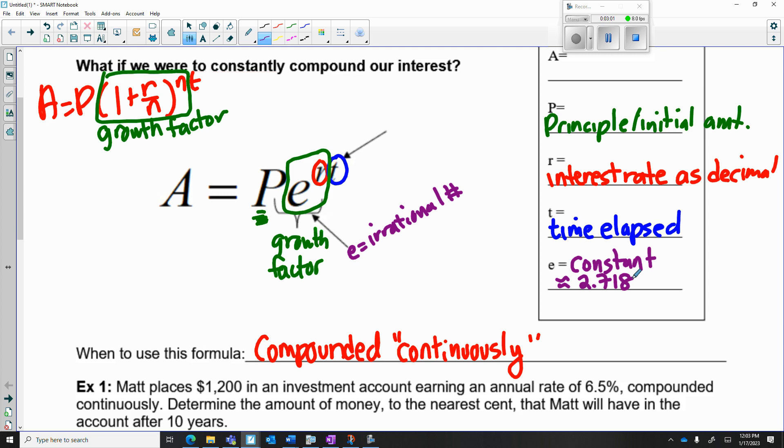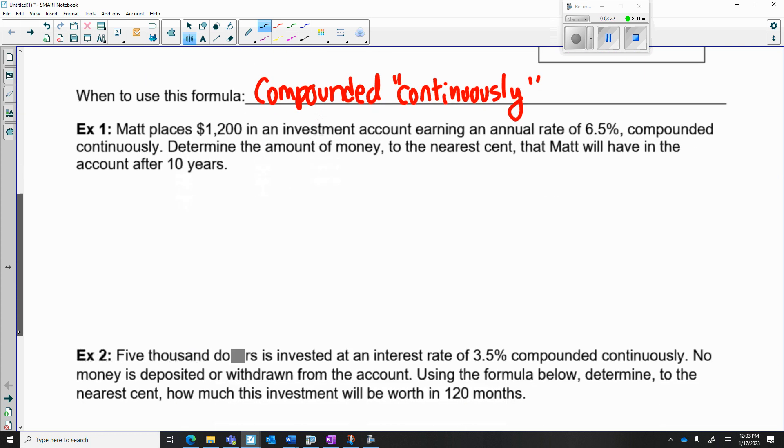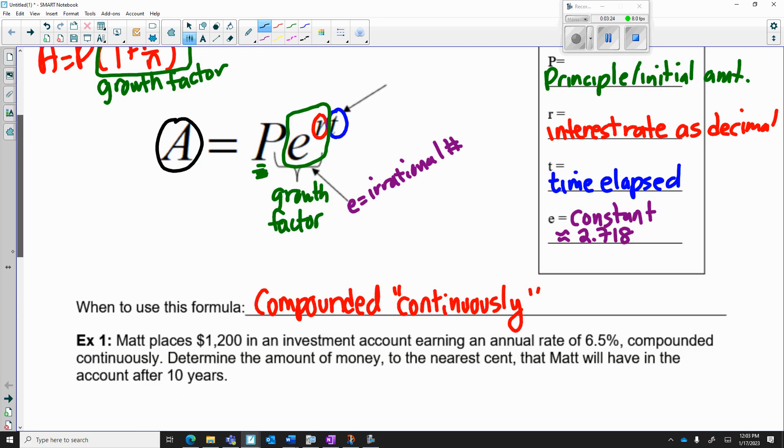So it's just a number. This is the new growth factor e^r, and then the t is the time elapsed. The final amount is still the same - the final amount A is the amount after the time period that we have in the bank if we're talking about money. Let's do an example. It's actually maybe easier to remember than the other one.